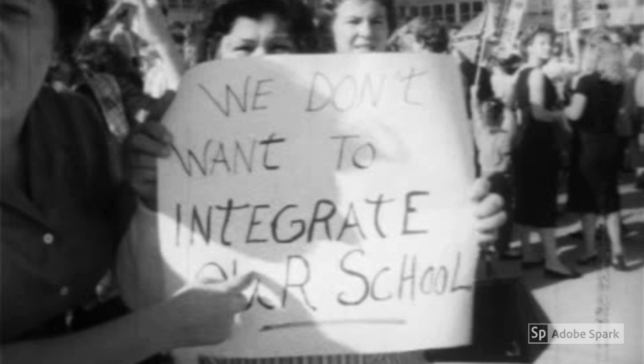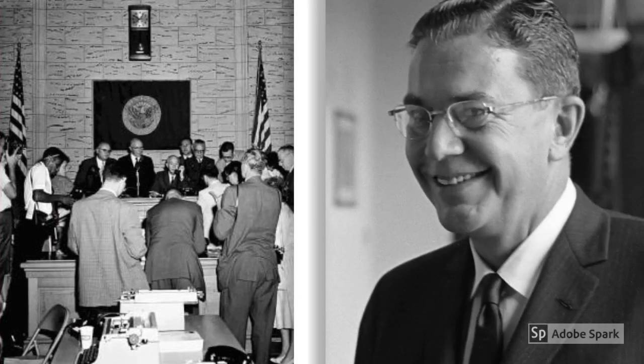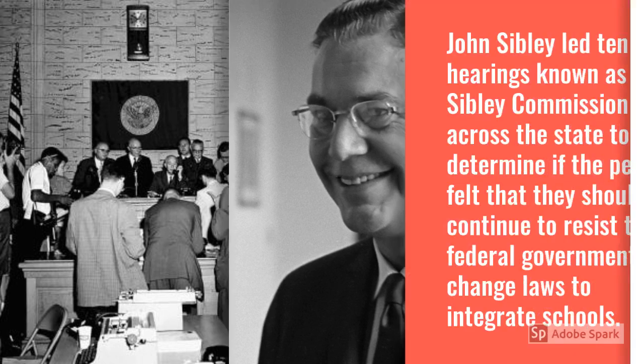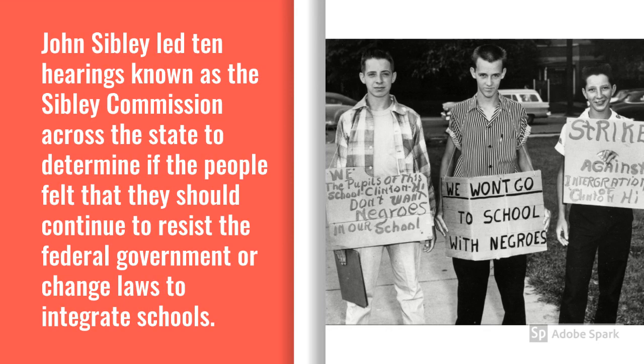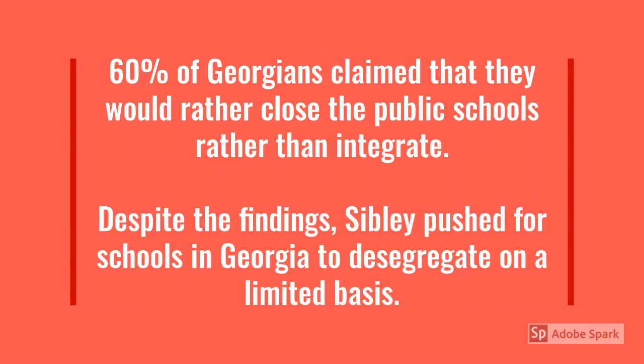Going back to the Brown v. Board of Education ruling and concerning the integration of public schools, the Georgia General Assembly supported massive resistance to go against the new ruling. By 1960, however, federal mandates were strongly encouraging Georgia to desegregate, and Governor Ernest Vandiver asked the citizens of the state to render their input regarding the controversy via the Sibley Commission. John Sibley was a segregationist lawyer who also believed resistance to federal mandates was useless. John Sibley led ten hearings known as the Sibley Commission across the state to determine if the people felt that they should continue to resist the federal government or change laws to integrate schools. Personally, he believed the best plan was to allow integration on a very small scale.